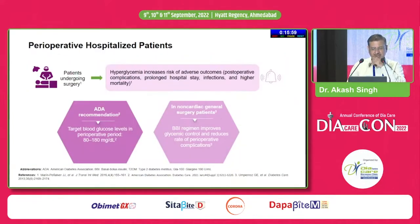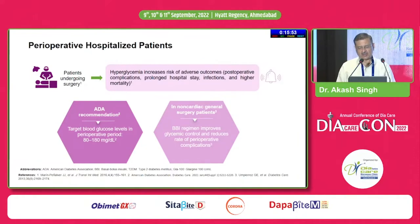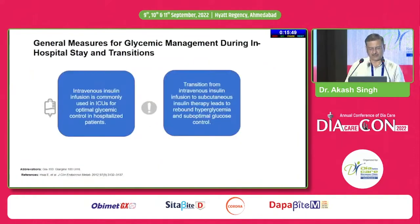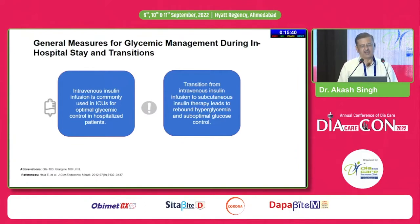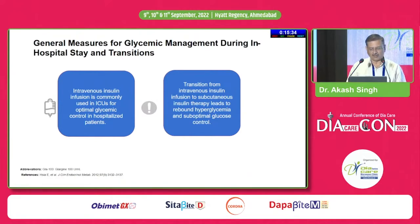ADA recommendations for peri-operative patients are to maintain sugar at 80 to 180 mg/dL; for non-cardiac general surgery patients, even better sugar control will be beneficial. When transitioning from insulin infusion to subcutaneous insulin, you have to give the insulin well in advance after calculating the dose and take care that sugars do not shoot up during this transition.